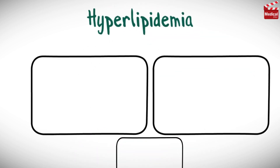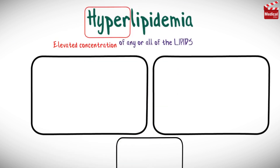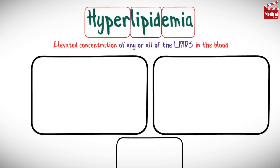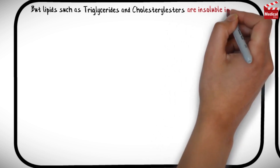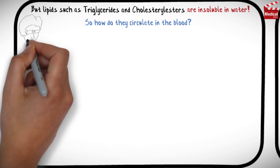Hyperlipidemia means elevated concentration of any or all of the lipids in the blood. But lipids such as triglycerides and cholesterol esters are insoluble in water. So how do they circulate in the blood?